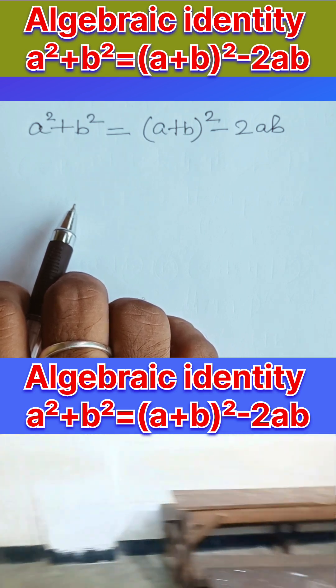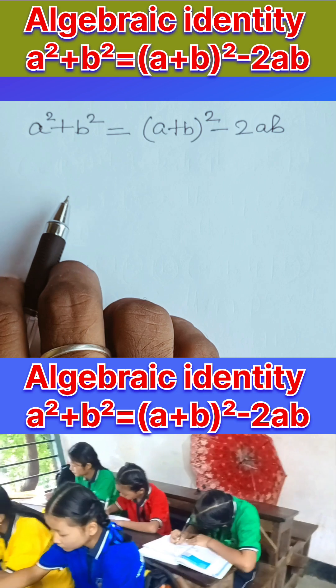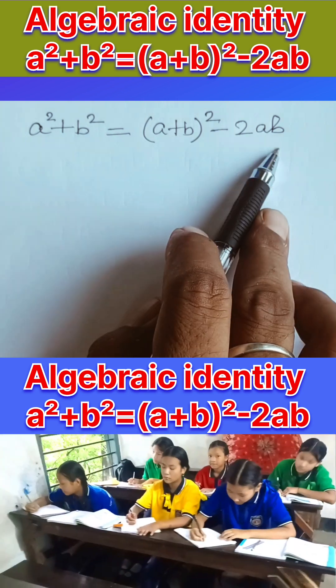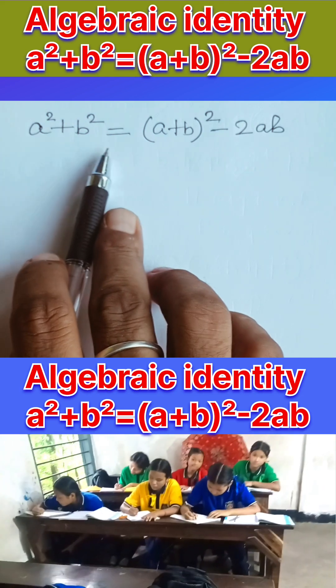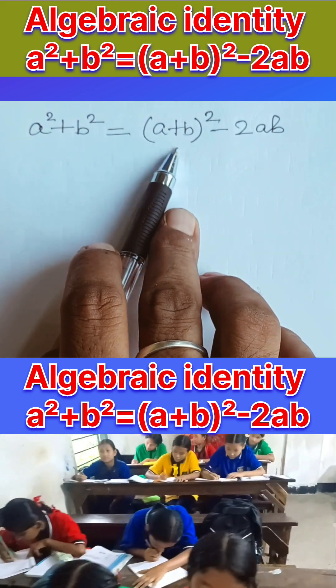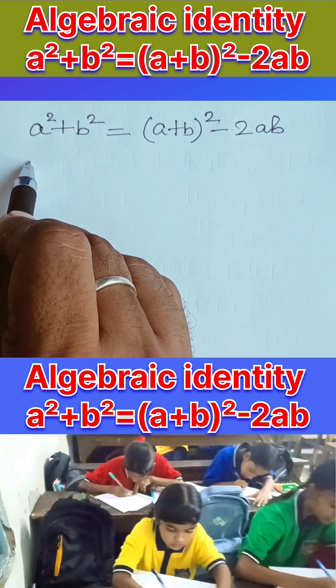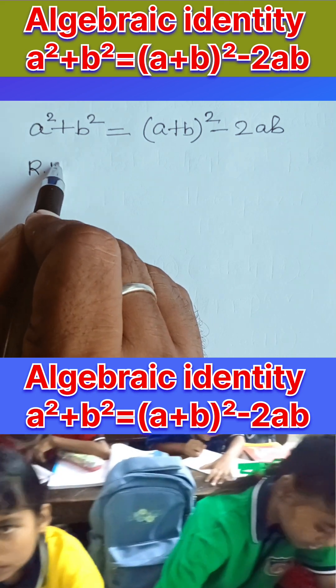This is my left hand side and this is my right hand side. In order to derive this algebraic identity I will start from the right hand side and I will bring the left hand side. My right hand side is equal to (a+b)² - 2ab.